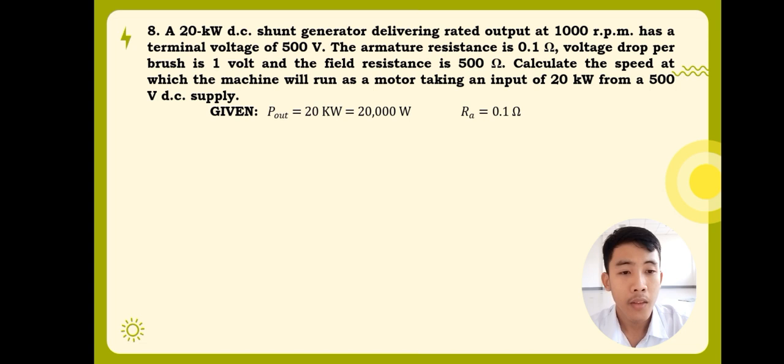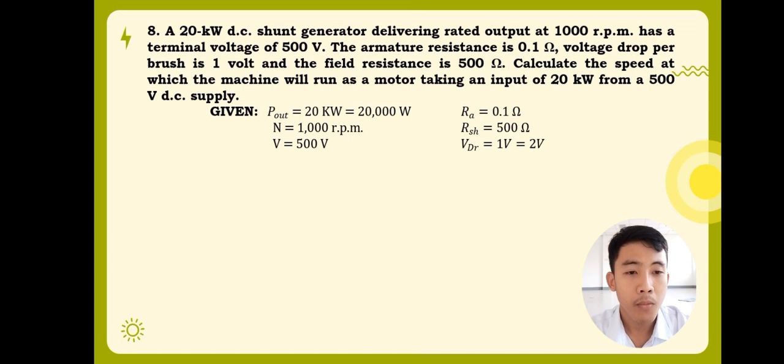Just like in problem number one, we'll first list down the given. The given are the output power, which is 20 kilowatts, and when converted, is equal to 20,000 watts. Then, for armature resistance, which is 0.1 ohms, the speed as a generator, which is 1,000 revolutions per minute, the shunt field resistance, which is 500 ohms, the voltage, which is 500 volts, and the brush drop, which is equal to, since there are two brushes, is equal to 2 volts.